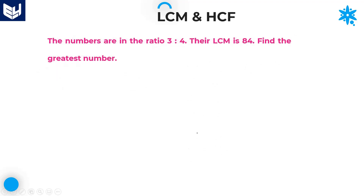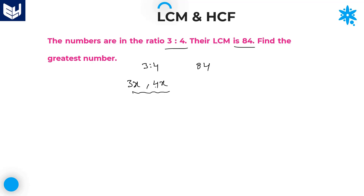Let us move on to the next question. The numbers are in the ratio 3:4 and their LCM is 84. Find the greatest number. Let the first number be 3x and the second number be 4x. The LCM of 3x and 4x is 12x.